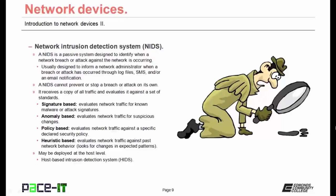A NIDS is a passive system designed to identify when a network breach or an attack against the network is occurring. They're usually designed to inform a network administrator when a breach or attack has occurred through log files, text messages, voicemails, and/or email notification. A NIDS cannot prevent or stop a breach or an attack on its own, as it's only passive in nature. It receives a copy of all traffic and evaluates it against a set of standards.